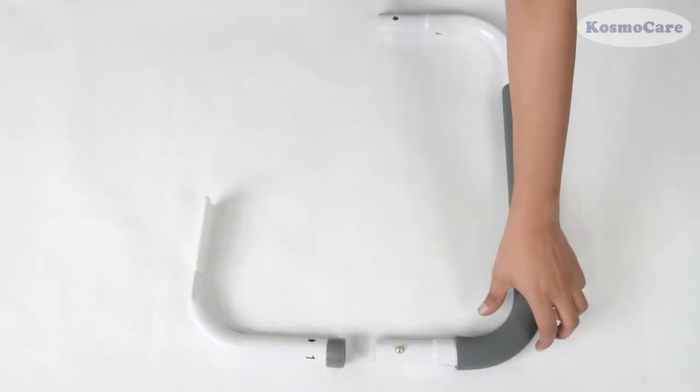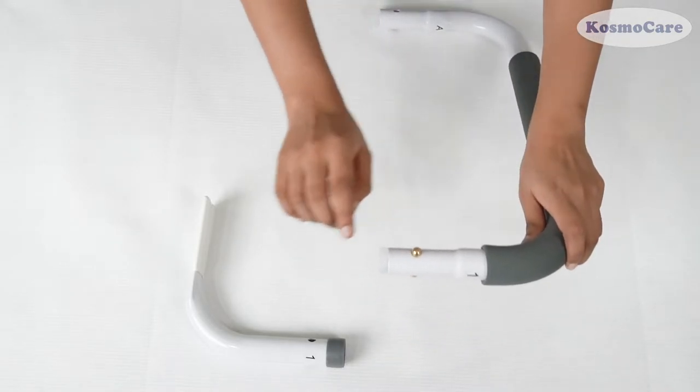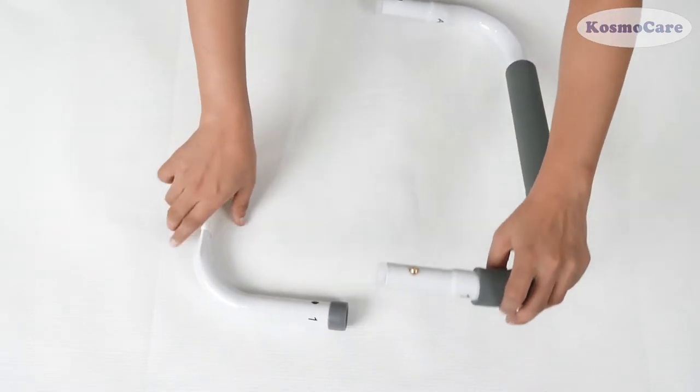To start with the assembly, slide the end of the toilet seat restorer with one label over the end of the armrest with the one label.